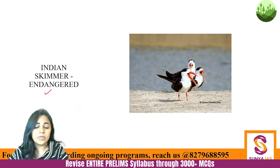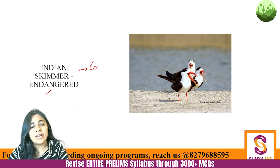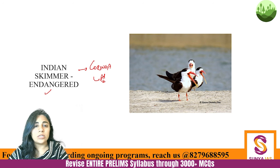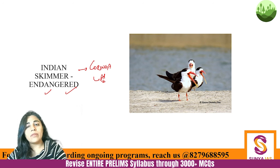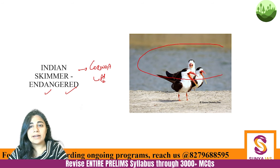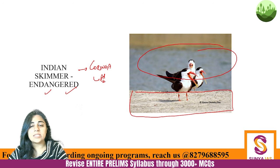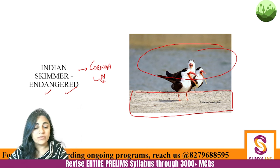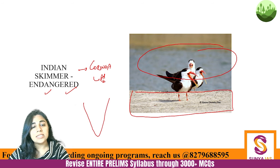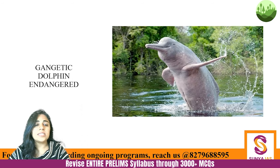The indian skimmer is an endangered species of bird. Koringa Wildlife Sanctuary is in Andhra Pradesh — they nest on exposed sandbars there. They lay eggs on sandbars and fly off after breeding. They are found along both western and eastern coastal areas of India.